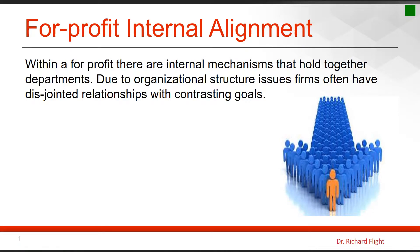Within a for-profit organization, there are internal mechanisms — silos — that are components of the organization. Due to organizational structure issues, firms often have an inability or difficulty to communicate across these different areas. We have operations, shipping, procurement, accounting, finance, marketing, sales, advertising, and public relations — all these different departments and groups. One of the challenges for any business is to get them all to work in concert with each other and not have contrasting goals.